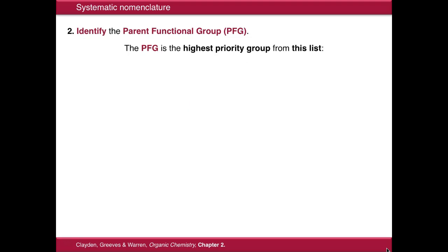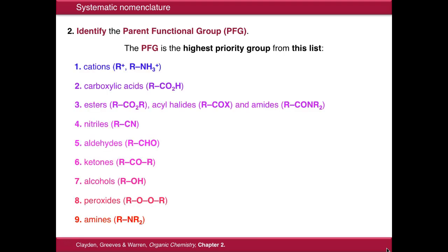Next we need to identify the parent functional group. The parent functional group is the highest priority functional group you can find in the molecule from this list. Starting with cations at the top, we go through carboxylic acids, ester derivatives which includes acid halides and amides, nitriles, aldehydes, ketones, alcohols, peroxides, and then finally amines. Note that ethers, alkyl halides, and nitro groups don't appear on this list — they can't be a parent functional group.